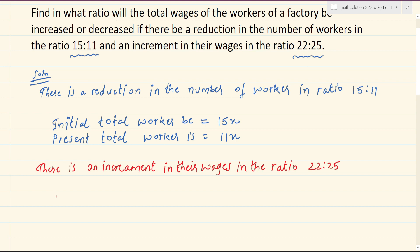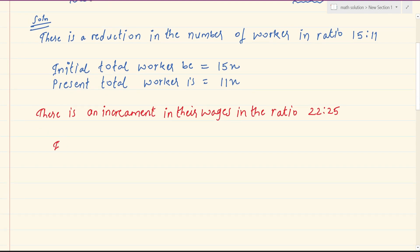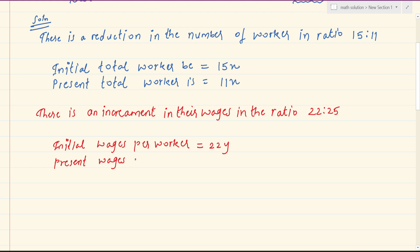Here we can see the initial wages per worker. Initial wages per worker equals 22y, and the final wages per worker equals 25y. So the ratio per worker is represented by y.